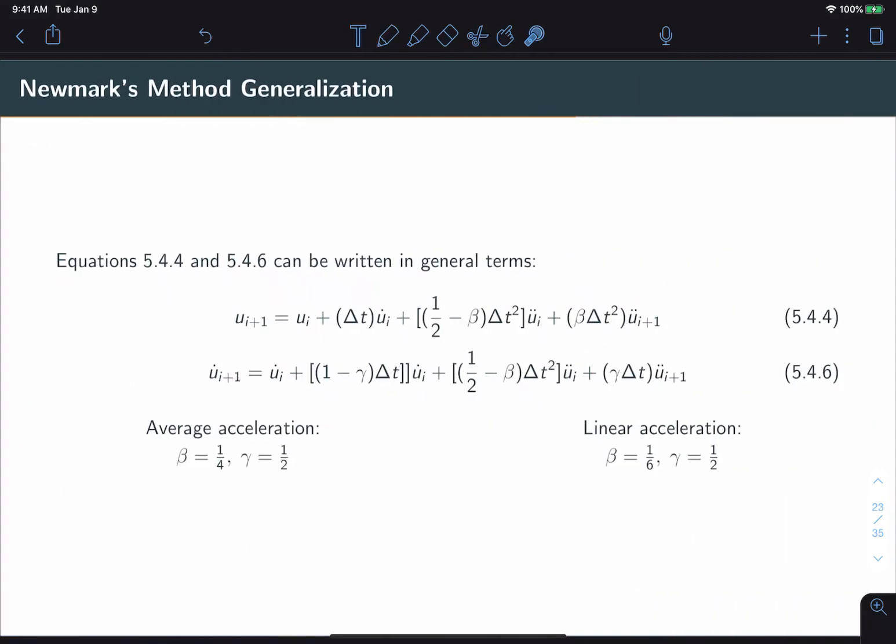These four equations can be standardized into a set of two general equations by replacing some of the constants with either a constant beta or a constant gamma. Depending on whether we are using the average constant acceleration approach or the linear acceleration approach, these constants will change but the equations will remain the same. This is a huge convenience that Newmark's method allows because we can quickly switch between two methods simply by switching these coefficients.